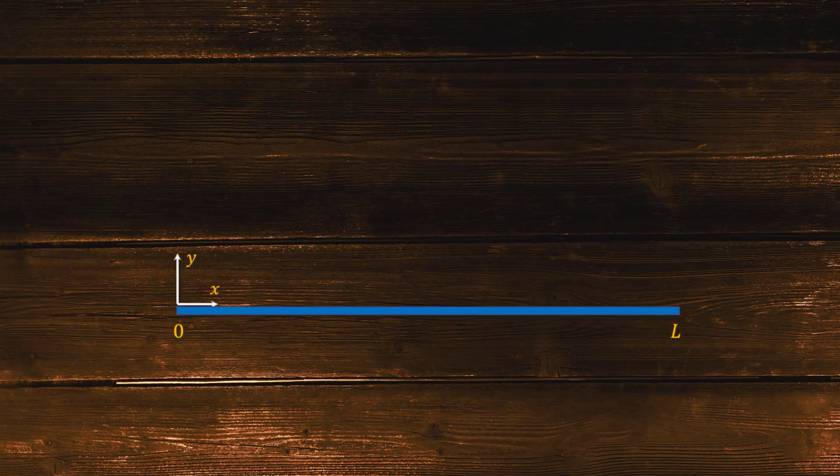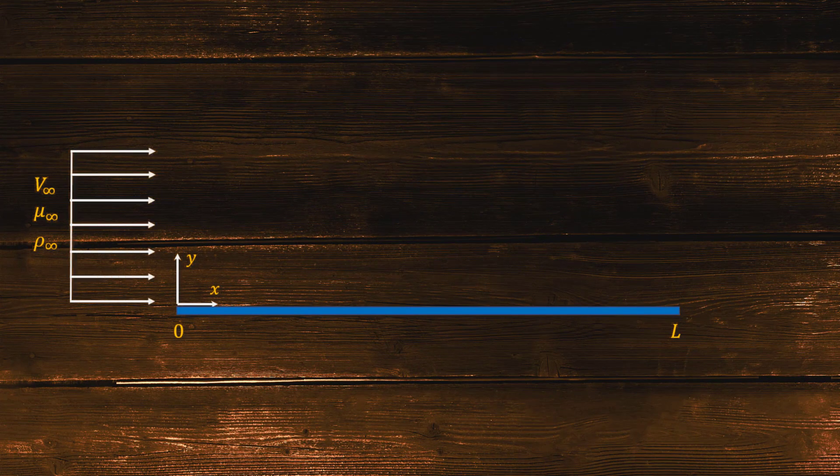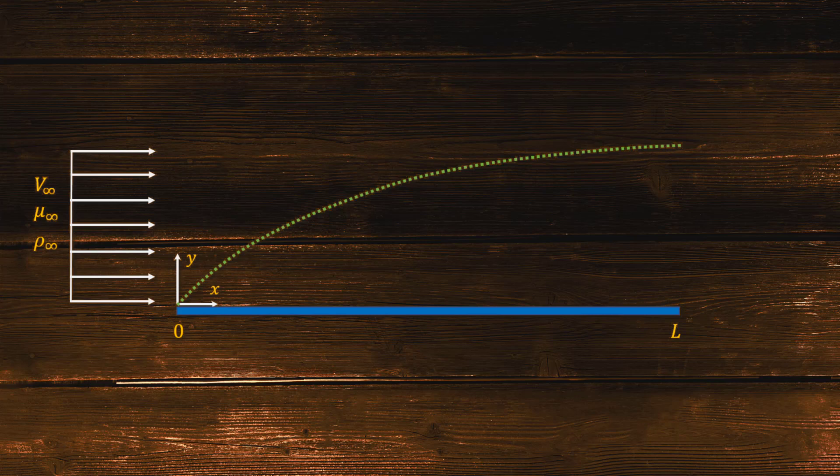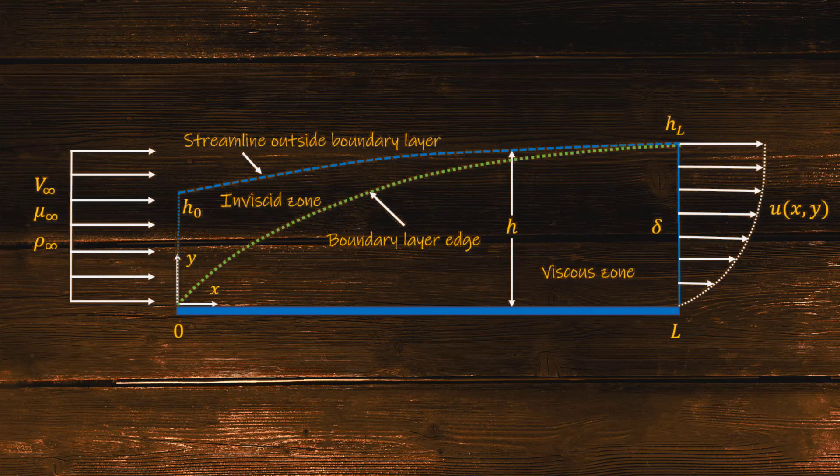Let's consider a flat plate immersed in a fluid moving parallel to the wall. This will generate a boundary layer on the plate and a specific profile of velocity inside the boundary layer. We define a control volume consisting of the plate, an inlet at the leading edge, and a station at distance L downstream of the leading edge. Also, a streamline at distance H from the plate that meets the boundary layer at station L.